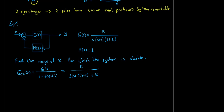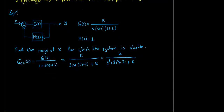Expanding the denominator: D(s) = s³ + 3s² + 2s + K. For stability, the roots of D(s) must be on the open left half plane. I'll apply the Routh-Hurwitz technique to inspect those roots.